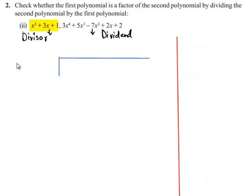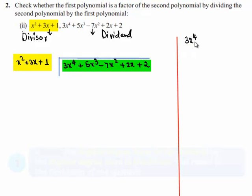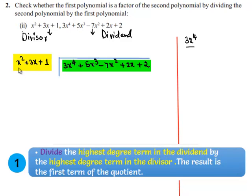So the divisor, which is x squared plus 3x plus 1, can be written here, and the dividend, which is 3x to the power 4 plus 5x cubed minus 7x squared plus 2x plus 2, can be written here. The highest degree term of the dividend is 3x to the power 4 and the highest degree term of the divisor is x squared. So on dividing them, we get 3x squared.